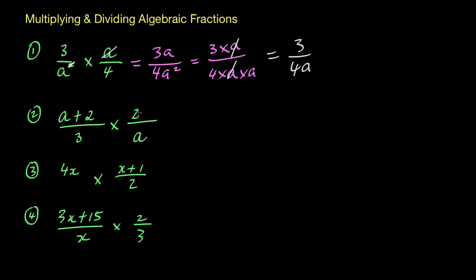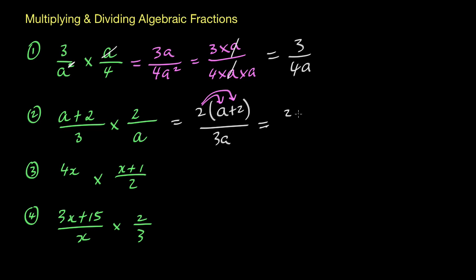For the second question, this 2 is going to multiply onto the (a + 2) on the left-hand side — everything merges together again. This 2 is placed outside of the brackets (a + 2), so it multiplies onto all of it. On the bottom you've got 3a. So 2 times a gives 2a, and 2 times 2 gives 4, leaving us with (2a + 4) over 3a. Don't make the mistake of trying to cancel that a, because a needs to be a common factor across the entire numerator.